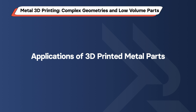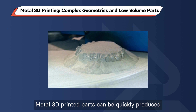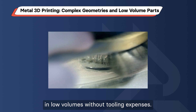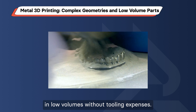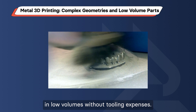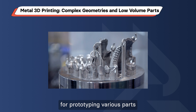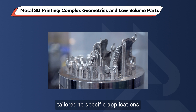Applications of 3D Printed Metal Parts. Metal 3D printed parts can be quickly produced in low volumes without tooling expenses. Engineers can use 3D printing for prototyping various parts and create features tailored to specific applications, such as lightweight mechanical aerospace components.